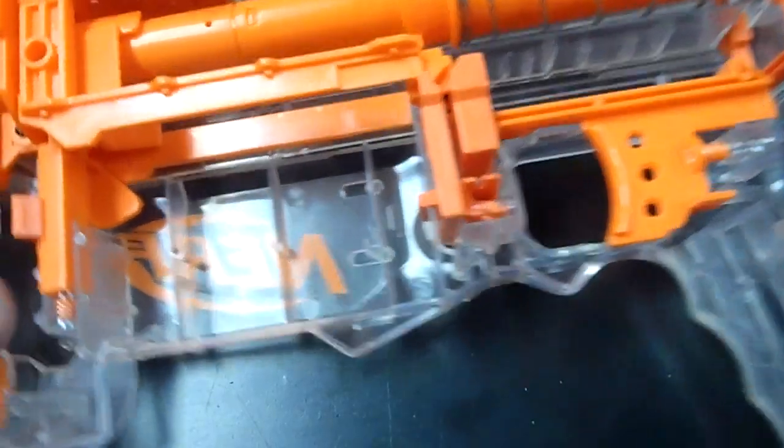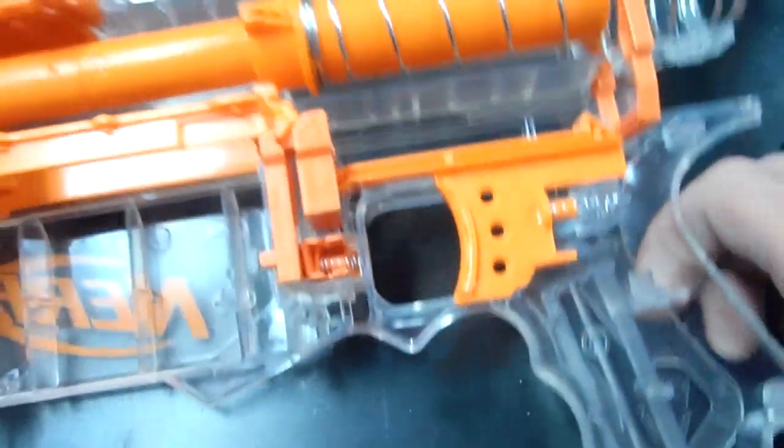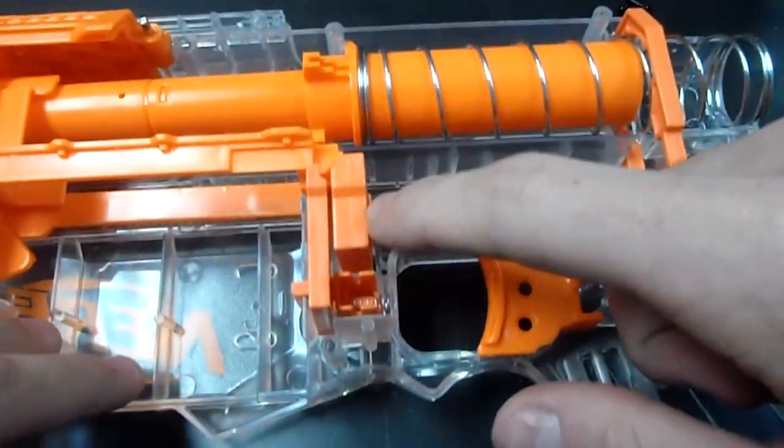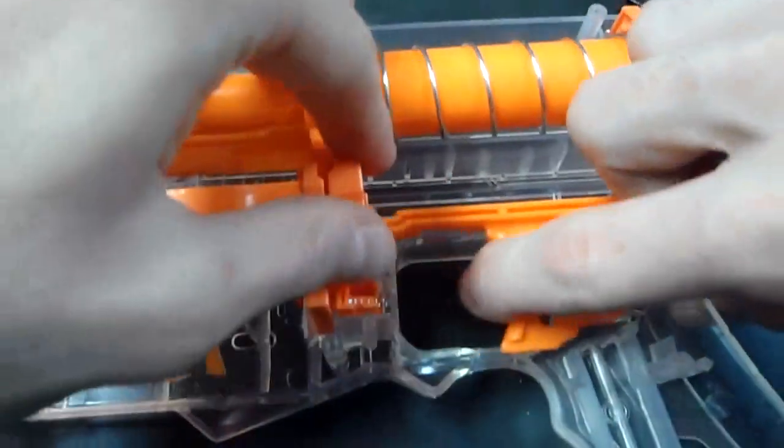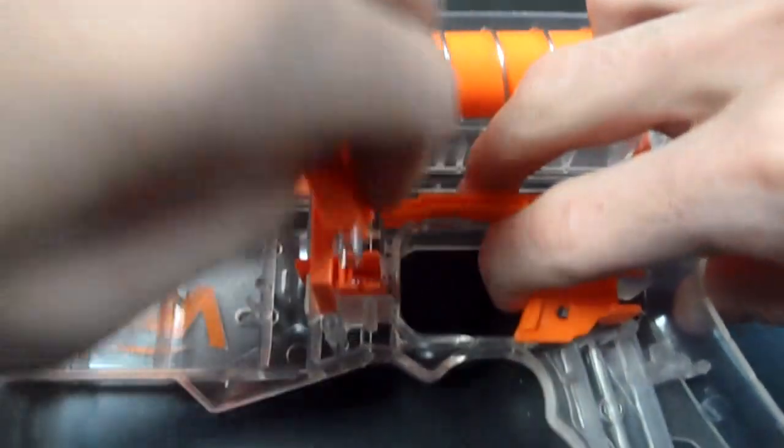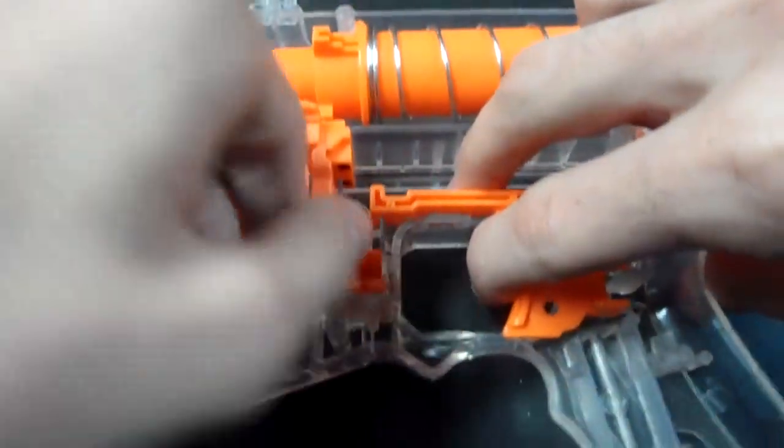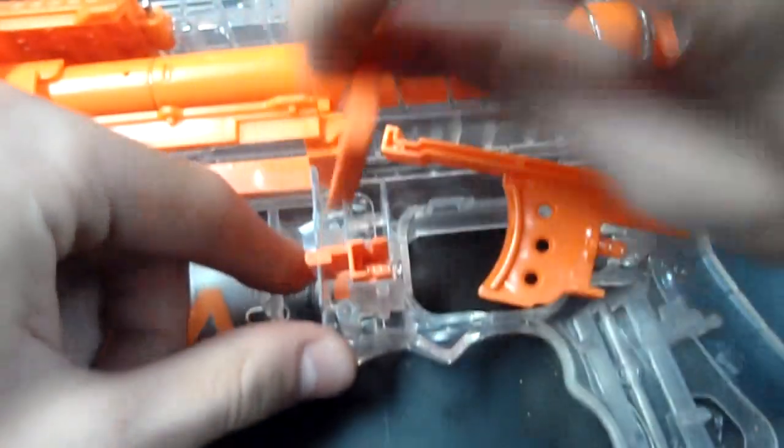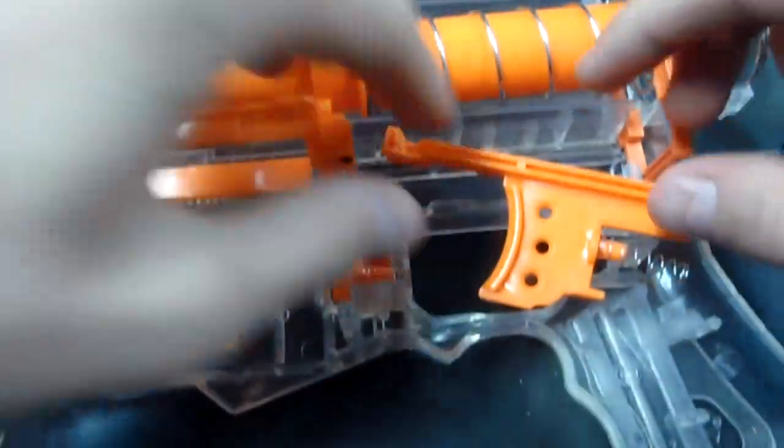Alright guys, when you take apart your Recon, these are the internals. This is the trigger lock and this is the clip lock, so I'm going to remove those pieces with no intention of putting them back in because I think that they're useless.